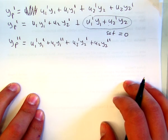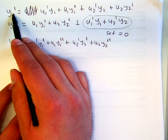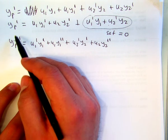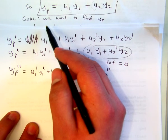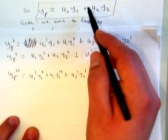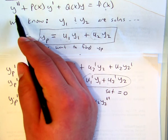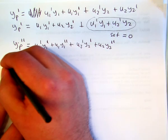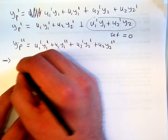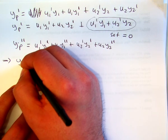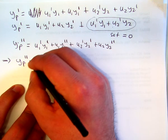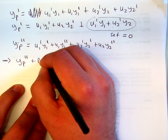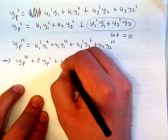Okay, now what we're going to do is go ahead and plug in y1 prime and y2 prime, the particular solution's derivatives, into the original differential equation up here. Okay, so we're going to go ahead and plug that in and take a look at what happens. So when I calculate yp double prime plus p yp prime plus q yp.